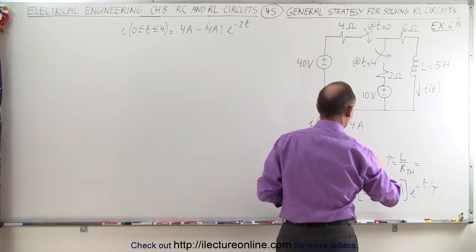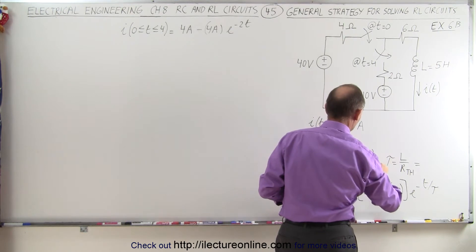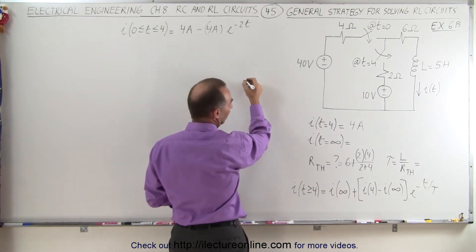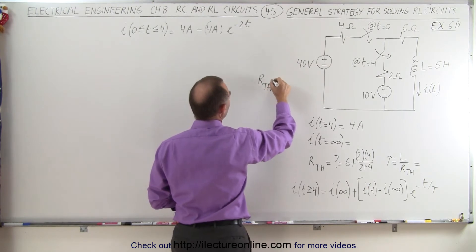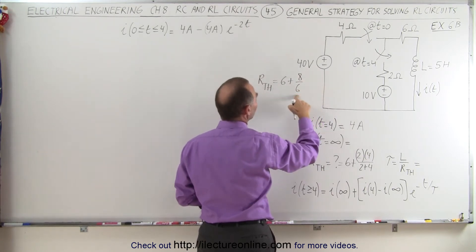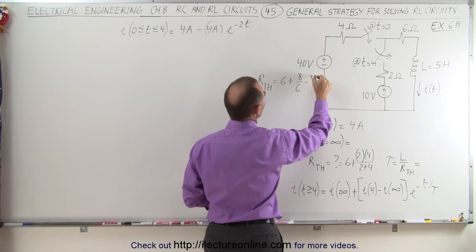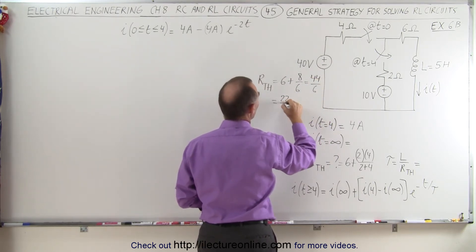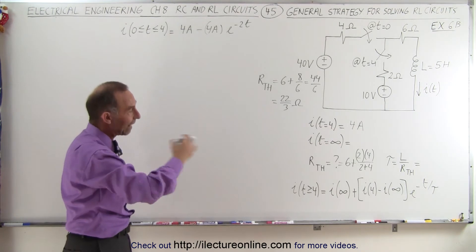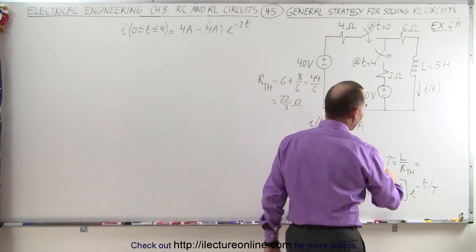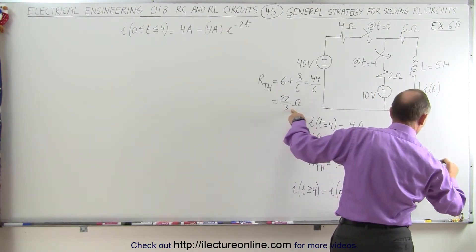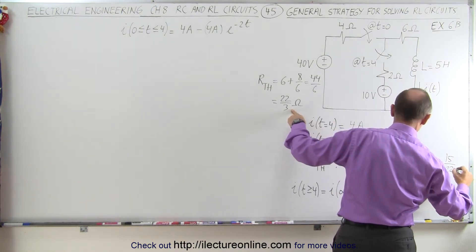That gives us two times four over two plus four. So it would be six plus eight over six. The Thevenin resistance equals six ohms plus eight over six, giving us 36 plus 8 over 6, which is 44 over 6, equal to 22 over 3 ohms. That's the Thevenin equivalent resistance for the inductor after the second switch closes. The new time constant is the inductance five henries divided by the new resistance 22/3, which gives 15 over 22 seconds.